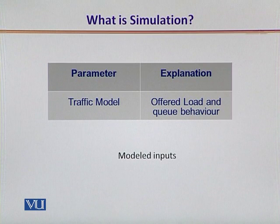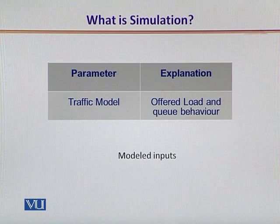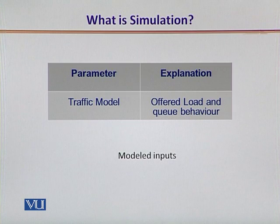And lastly, the traffic model that we assume. We could assume a Poisson arrival or any other kind of self-similar traffic. This will result in an overall effect on the offered load that enters into the wireless access point and the resultant queuing behavior.